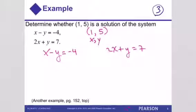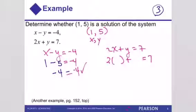So we have x, which is 1, minus y, which is 5, is supposed to equal negative 4. So we know that this is negative 4 equals negative 4. Checks. That works. Now we go to the other equation, and we have 2 times the x plus the y equals 7. So the x is 1, the y is 5. So we want to show that 2 plus 5 equals 7, and indeed, 7 equals 7, so we're good. It checks.